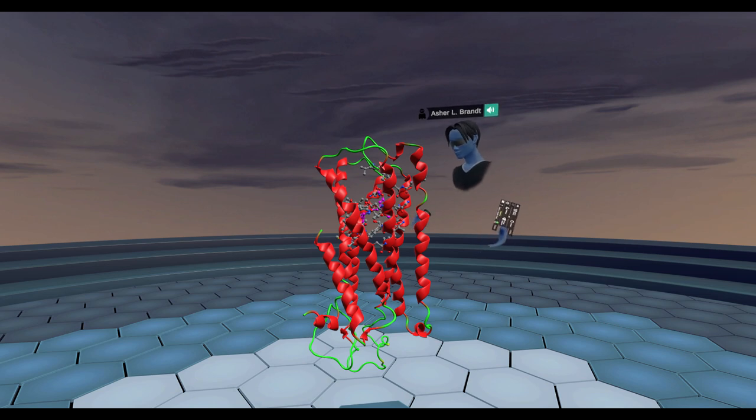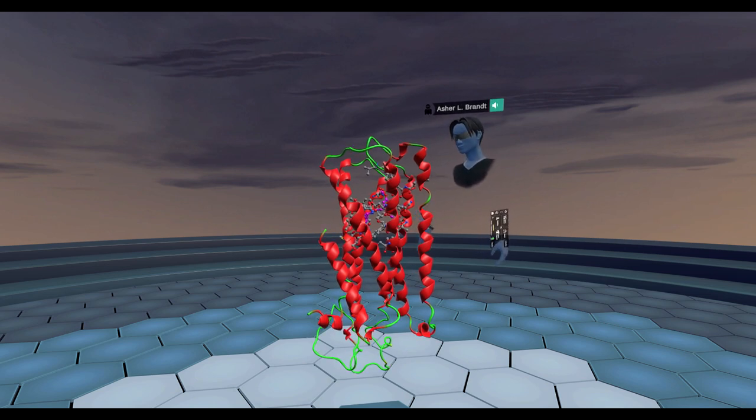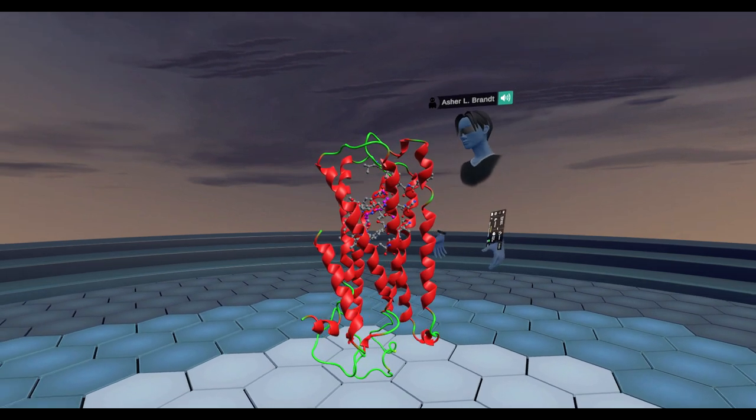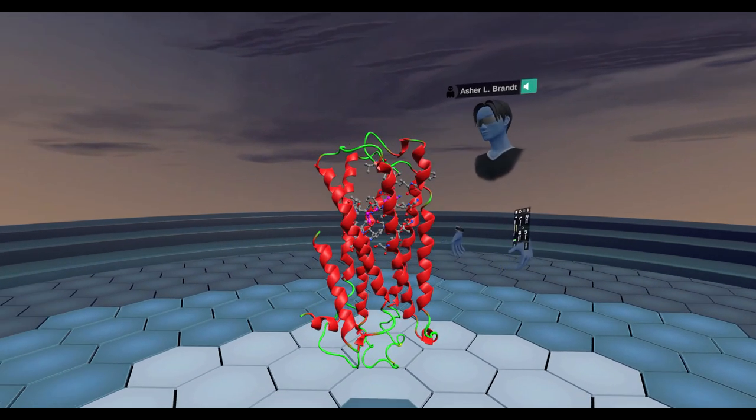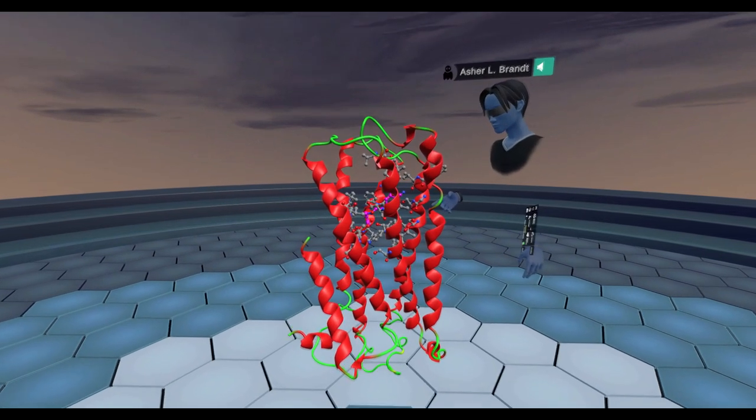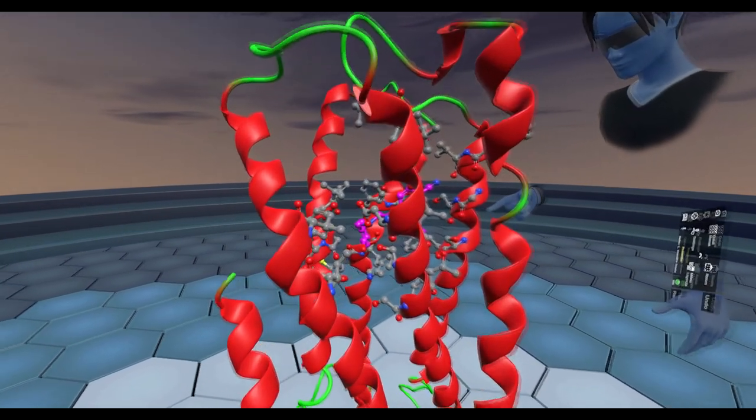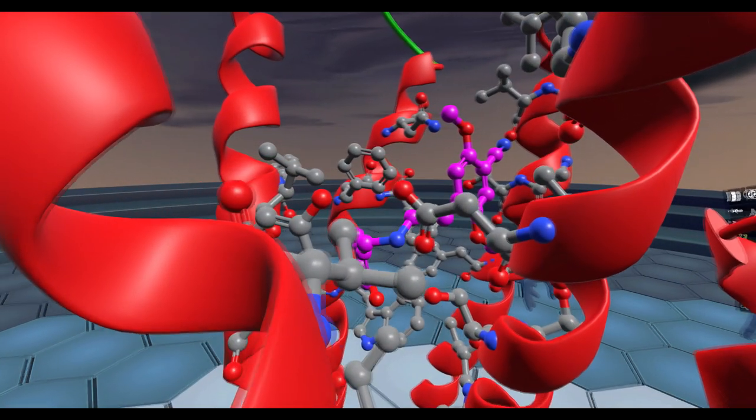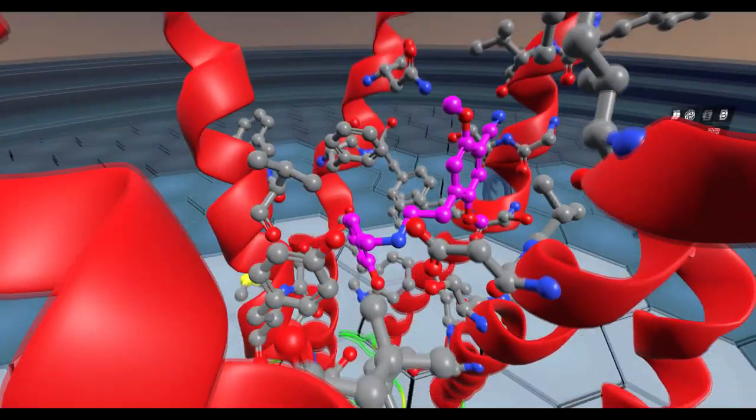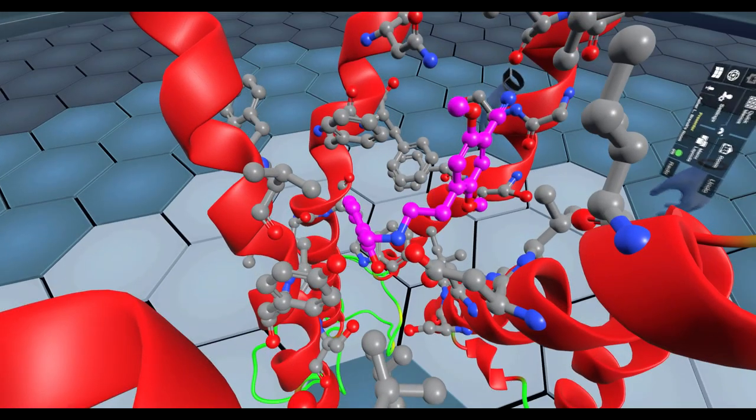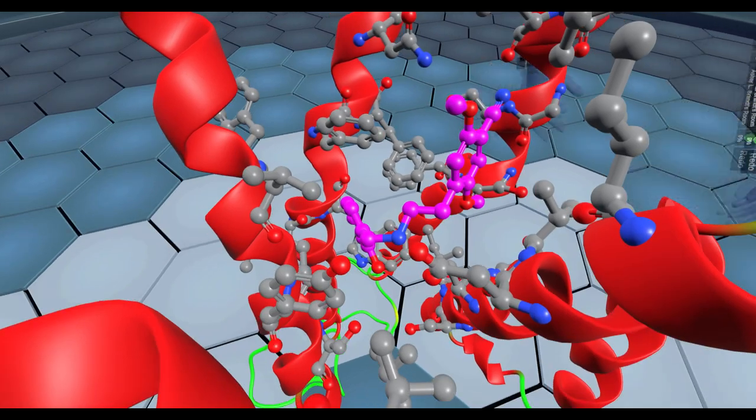What's really nice about talking about a topic like this is we already have the crystal structure for serotonin 2A receptor with an N-bomb compound bound to it. This is that crystal structure which was put out by Brian Roth's research group, I believe in October or November of 2020, so a little less than a year ago.